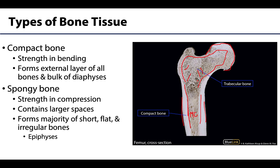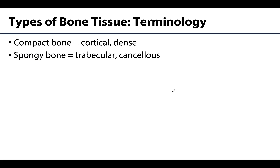Compact bone is functionally important in support and protection, and is especially important in resisting stresses produced by movement and weight — critical for strength and bending. Spongy bone is located most frequently at the ends of long bones, which are vital in joint formation. The trabeculae, while appearing disorganized, are actually very well organized to help reduce stress and over-compression of the bone.